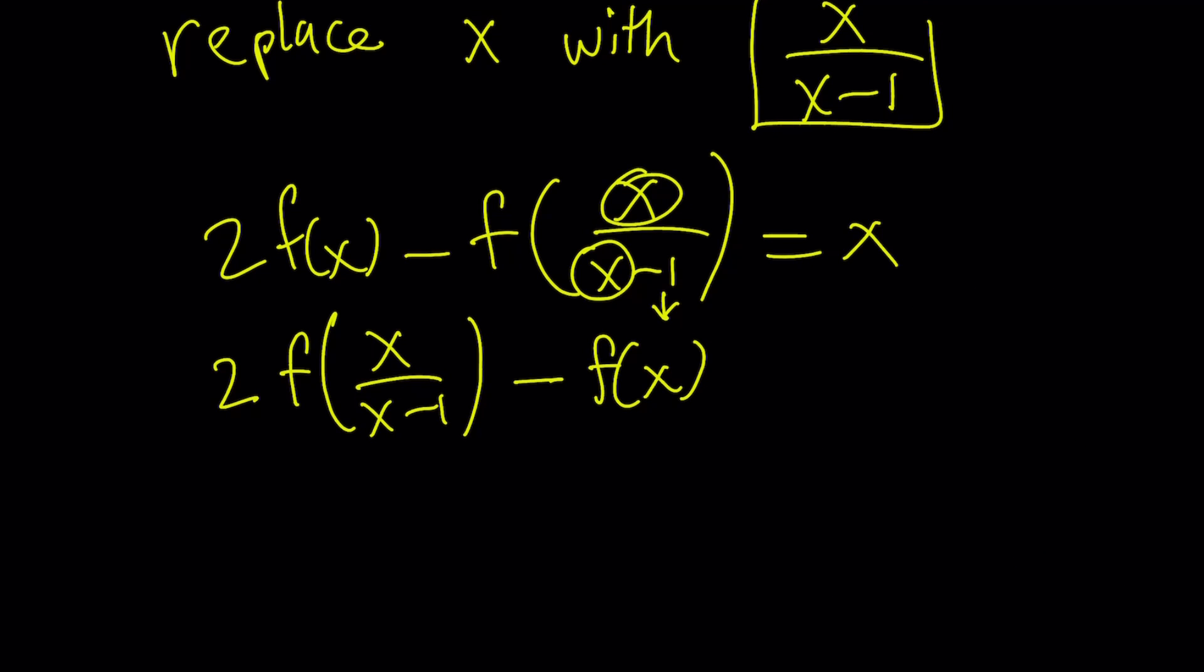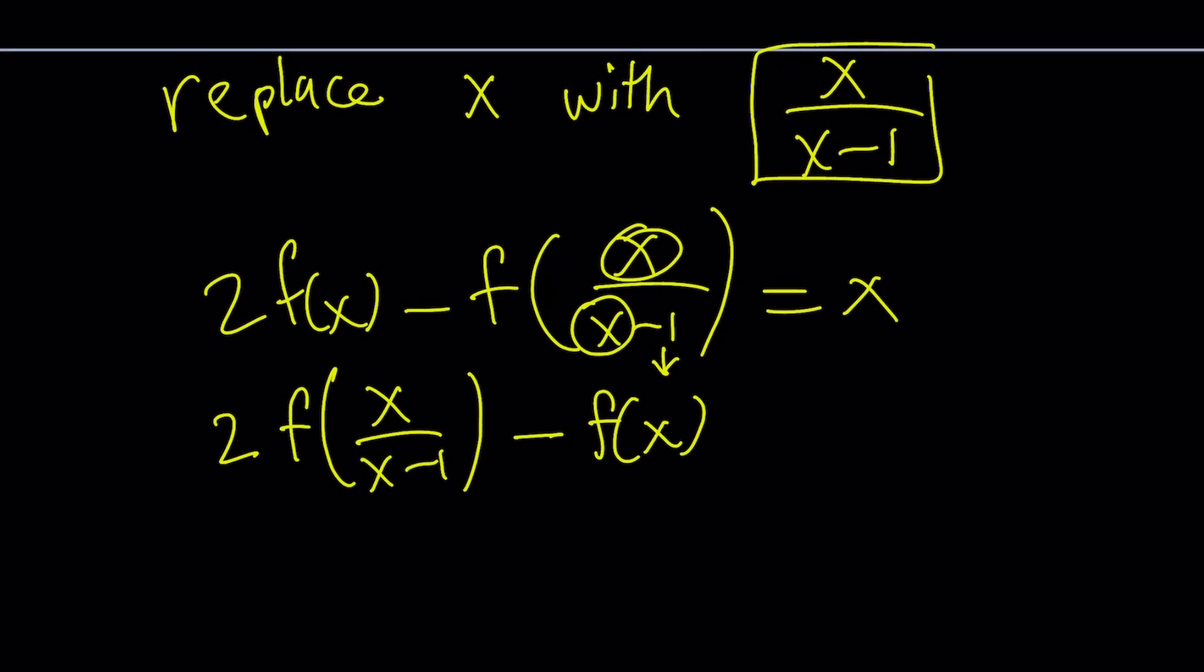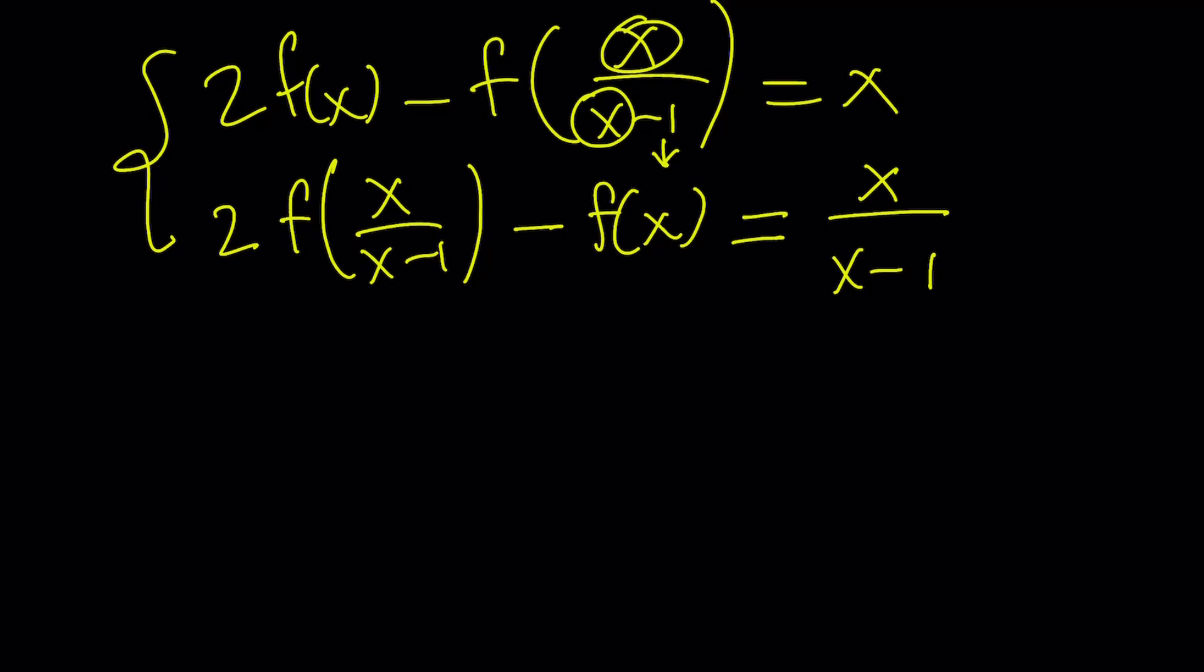So that's what we do. Replace x with that. And obviously, you have to do it on both sides. So the right-hand side is going to give me x over x minus 1. So I got a system of equations from here. Let's clear this up a little bit.